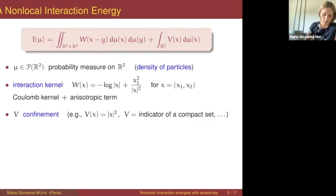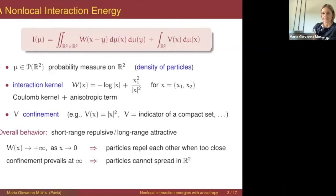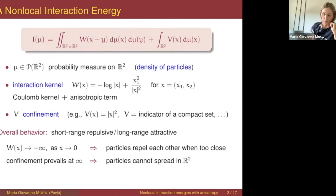From a mathematical point of view, the interaction kernel is singular at zero because of the logarithm — it goes to plus infinity as x tends to zero. This means the energy will become very large when particles are very close to each other. Because of this singular behavior, particles tend to repel each other when they are too close.